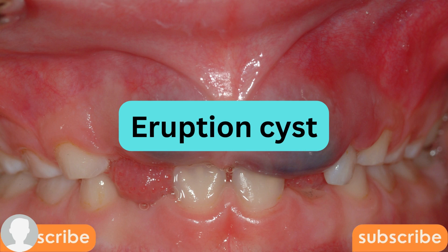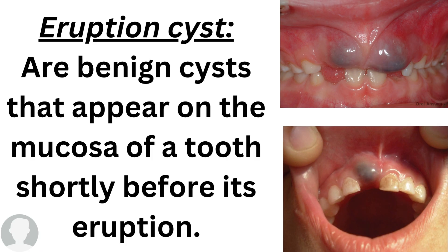Eruption cysts are benign cysts that appear on the mucosa of a tooth shortly before its eruption. As you can see in the pictures, the teeth that are having the eruption cysts are not yet erupted. That's why we are having an eruption cyst — it is associated with the eruption of the tooth.